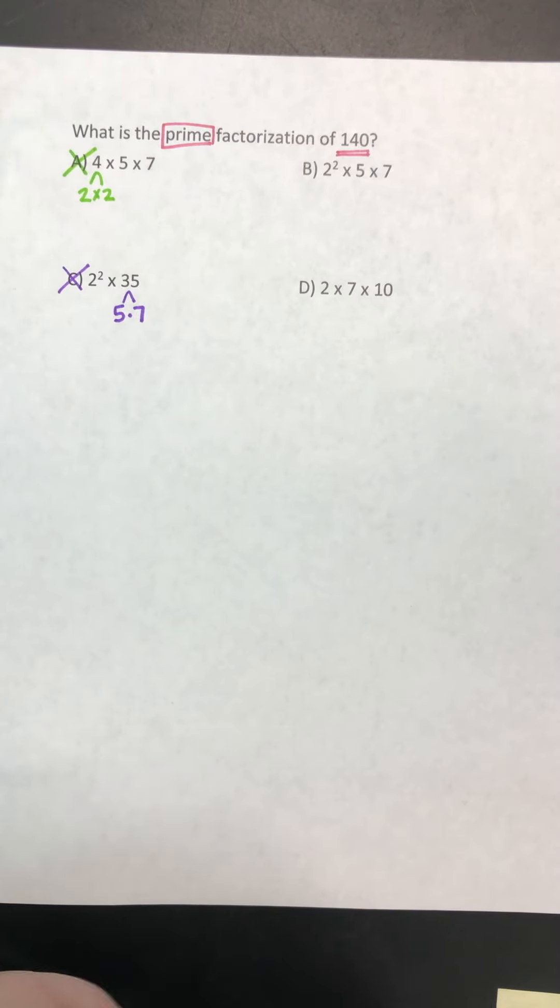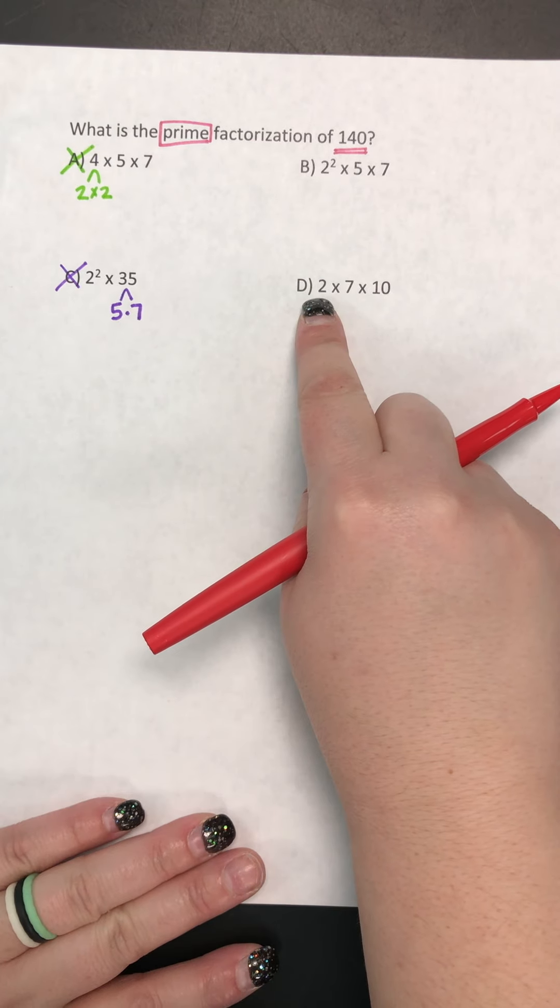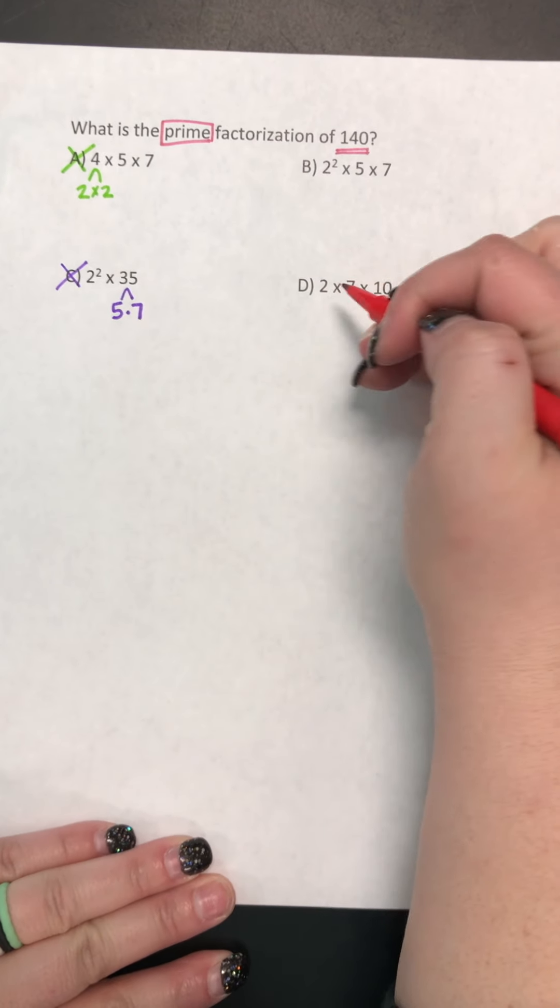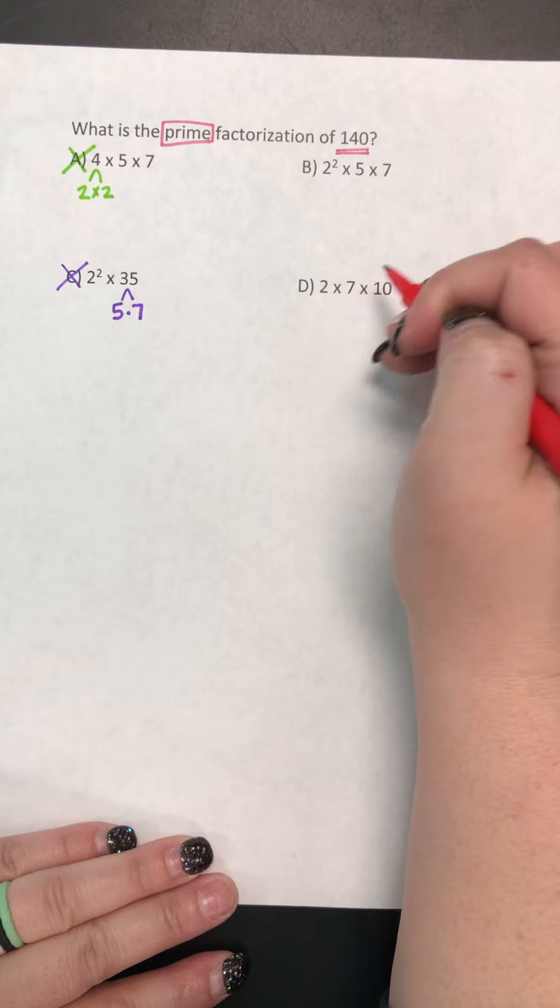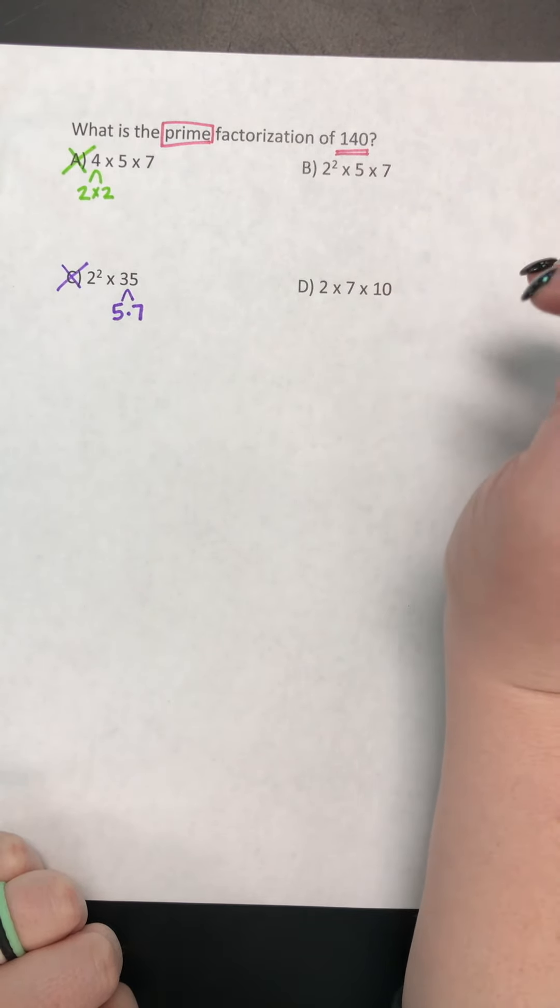Looking at answer choice D, we have 2 times 7 times 10. So again, we have already said that 2 is prime, because 1 times 2 is 2, and then 7 is prime. 1 times 7 is 7. And so now we have to think about 10.